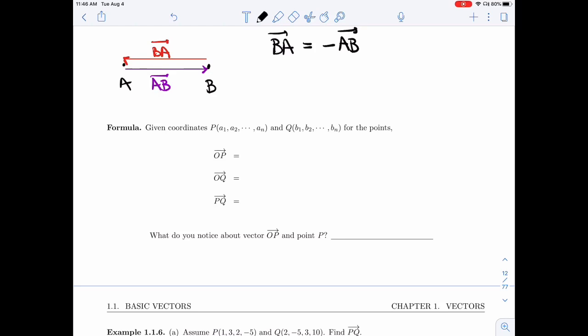So if I want the vector OP, that's the vector from the origin to the point P, which has components a_1, a_2, a_n.